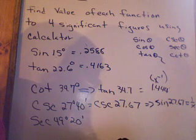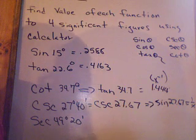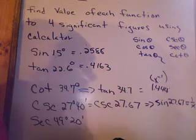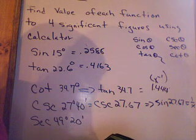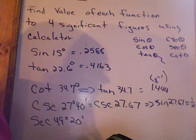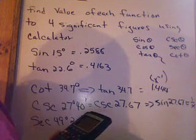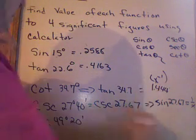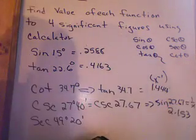Sine 27.67, and I get 0.464378. But I want the cosecant of that. So now I do second answer, x^-1. And I get 2, 1, 5, 3. 2.153. Around.